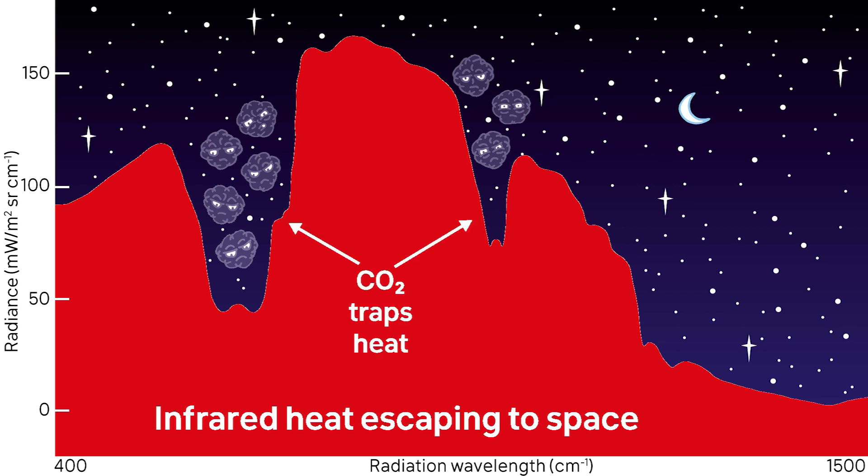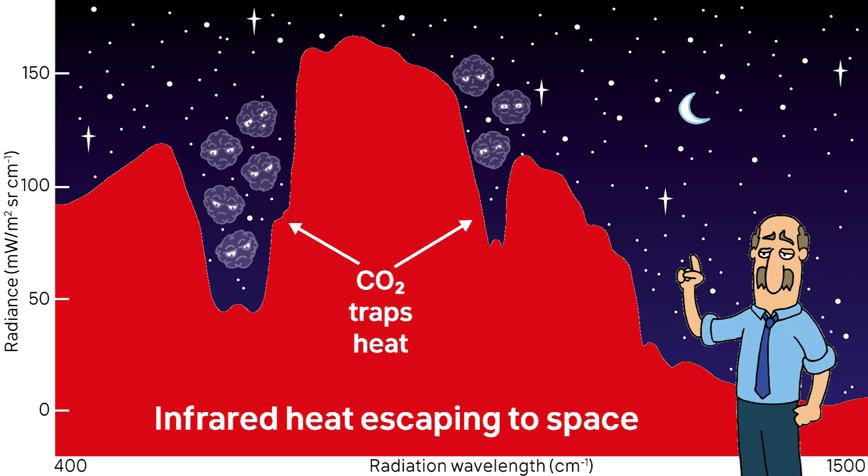Nevertheless, cranky uncles reject even basic physics like the greenhouse effect. One cranky argument is that carbon dioxide, or CO2, is a small percentage, 0.04% of the atmosphere, so it can't have a significant effect.